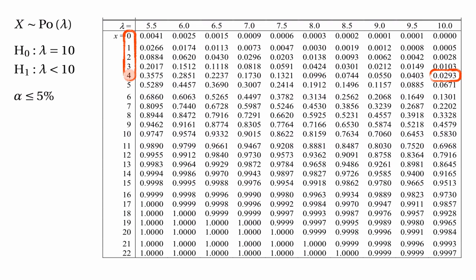Notice that we can work out these things very quickly by looking at the table, if we know what to look for. All we need to do is scan down the right-hand column headed by lambda equals 10 until we find the largest probability that's less than 0.05. We get to 0.0293 — that's still less than 0.05 and is the largest value we can reach without going over. Then we look along that row to find 4, showing the critical region is all numbers up to 4, and the critical value equals 4.